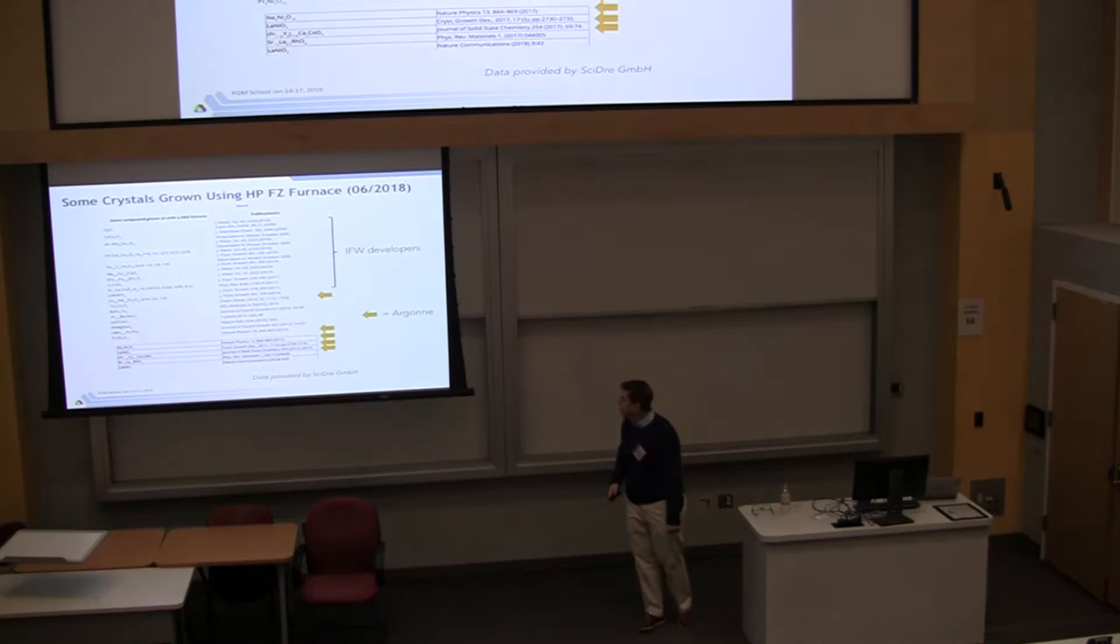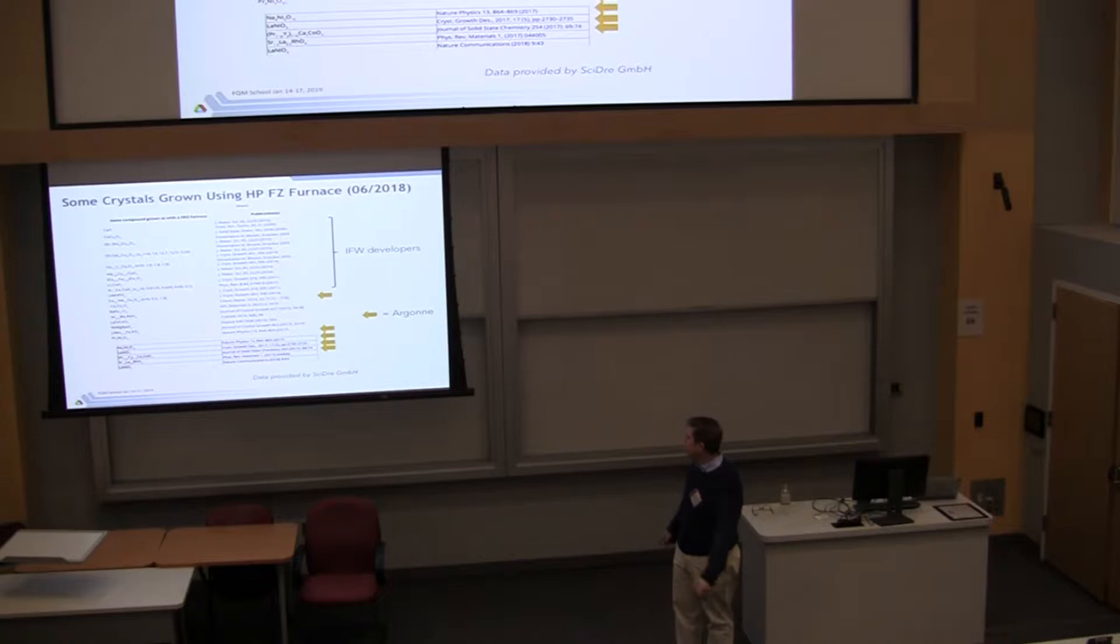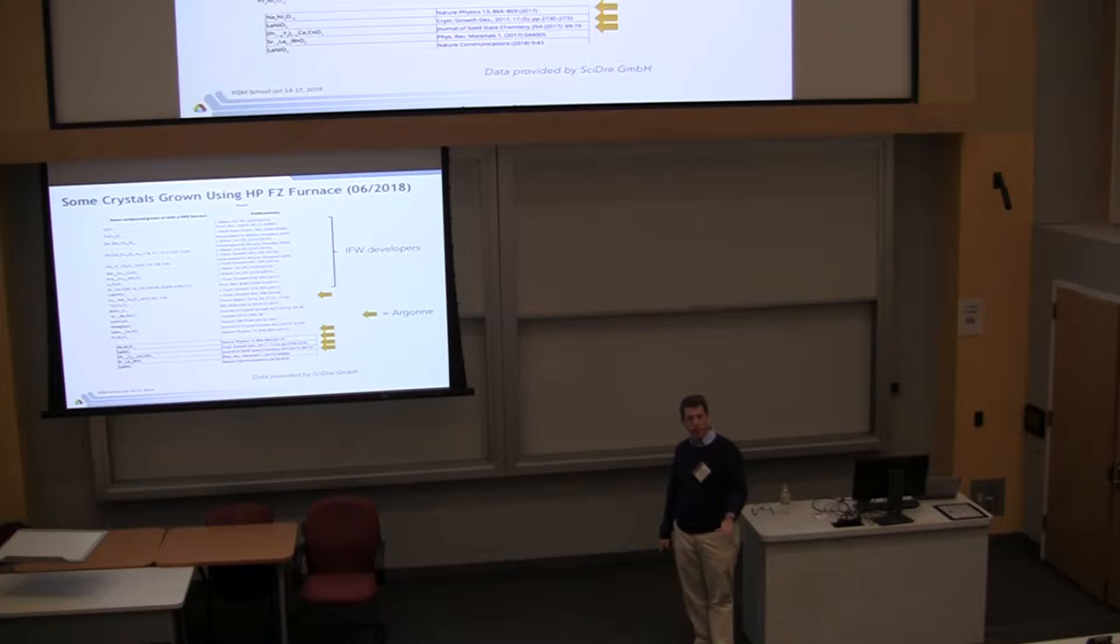But nonetheless, all these approaches are just different geometries for accomplishing the same end. So you get a hot zone here in a very narrow region that you can then pass a polycrystalline ingot through and grow a crystal. And so the advantages that David pointed out a minute ago is that it's containerless because the crystal and the feed rod are suspended in air or in some atmosphere enclosed in an envelope, usually a silica envelope.